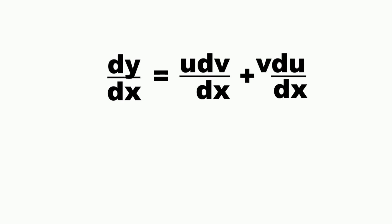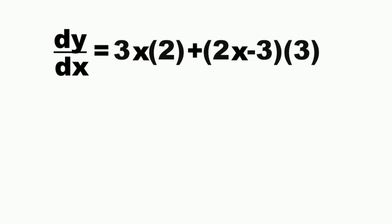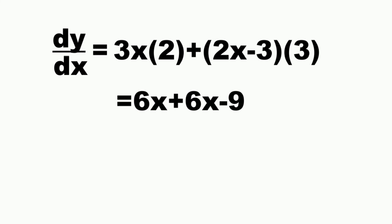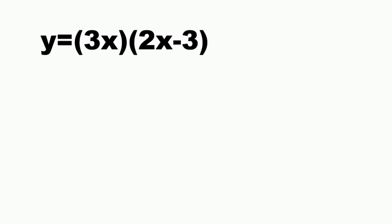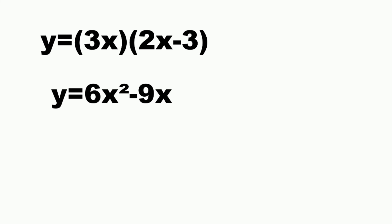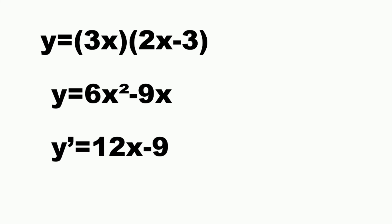Substituting the derived results, we have 3x times 2 plus the quantity 2x minus 3 times 3. 3x times 2 is 6x, and using the distributive property we have 6x minus 9. 6x plus 6x is 12x, so dy over dx equals 12x minus 9. This can be shortcut by multiplying 3x and 2x minus 3 first using the distributive property, giving 6x squared minus 9x, then using the sum and difference rule of differentiation to get 12x minus 9.